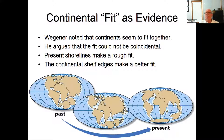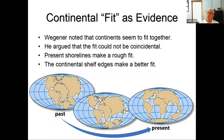Looking at Wegener's argument, he noticed the continents seemed to fit together and argued it couldn't be accidental. Present-day shorelines make a rough fit, but modern maps showing ocean bathymetry reveal that continents have a shelf of zero to 600 foot depth around them. If you look at that shelf edge, it makes a better fit. The average depth of the oceans is about 13,000 feet.